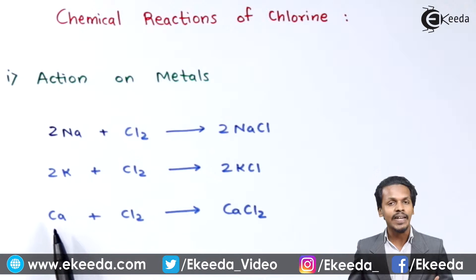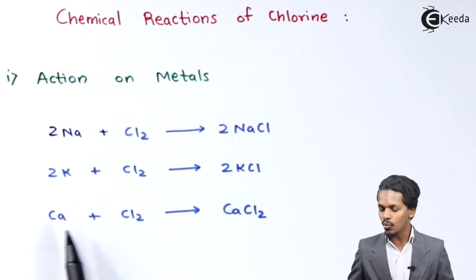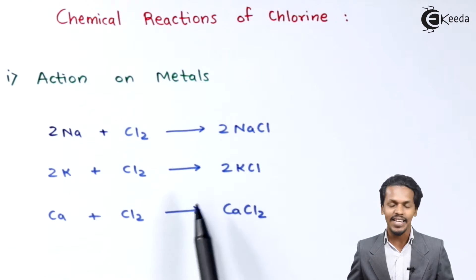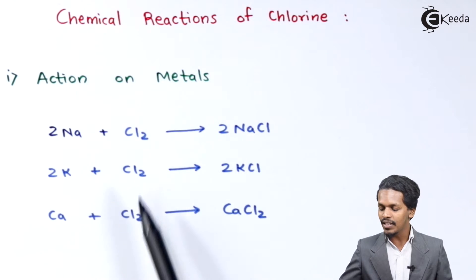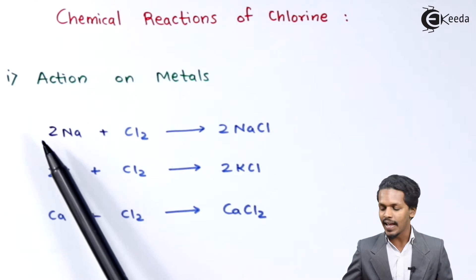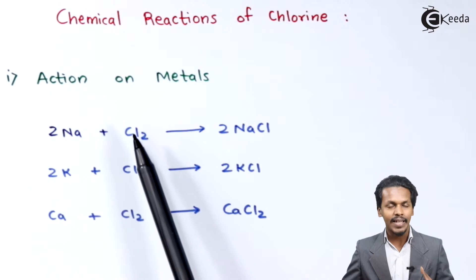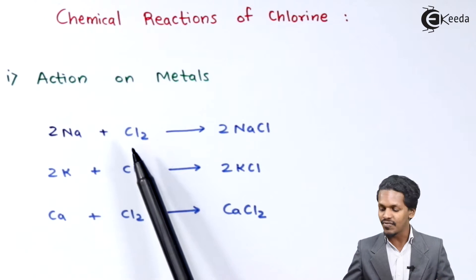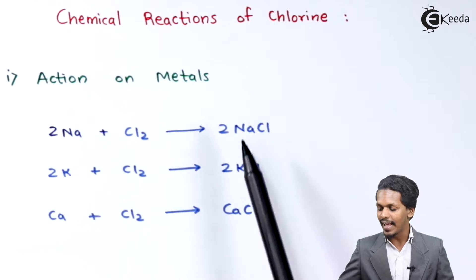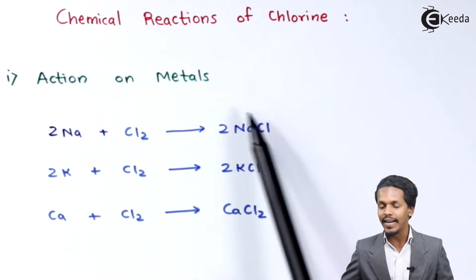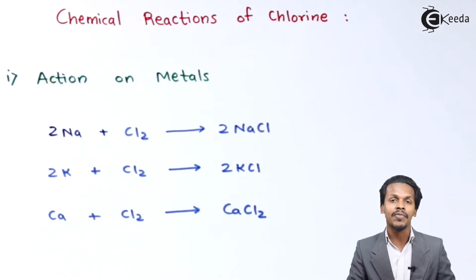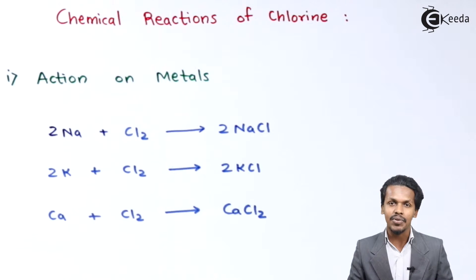Even calcium is very much reactive to chlorine, giving calcium chloride, CaCl₂. These are all S-block elements, and this is how chlorine, being a group 17 element, is very much reactive to S-block elements. We can obtain a salt whenever chlorine is reacted with S-block elements.